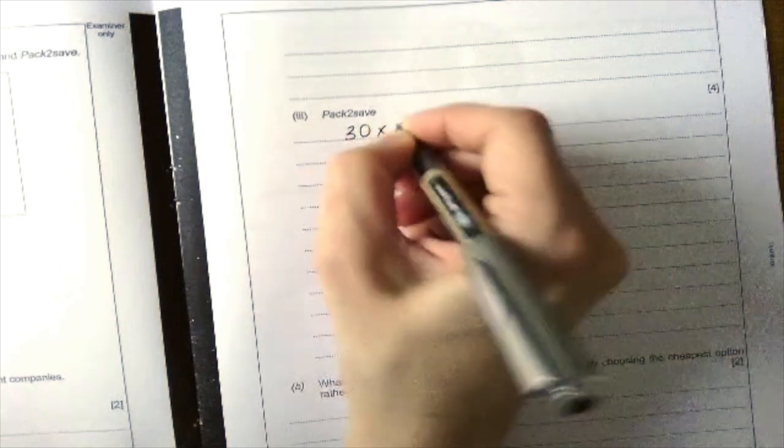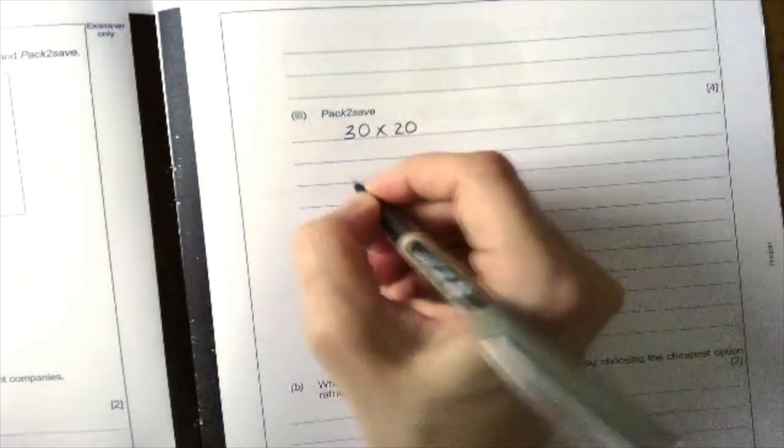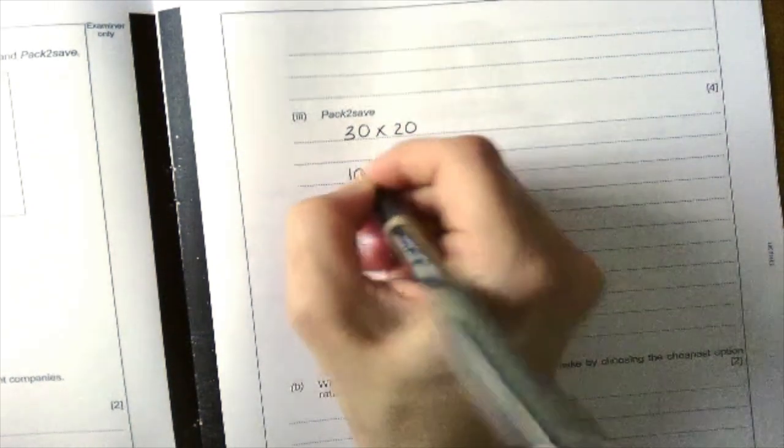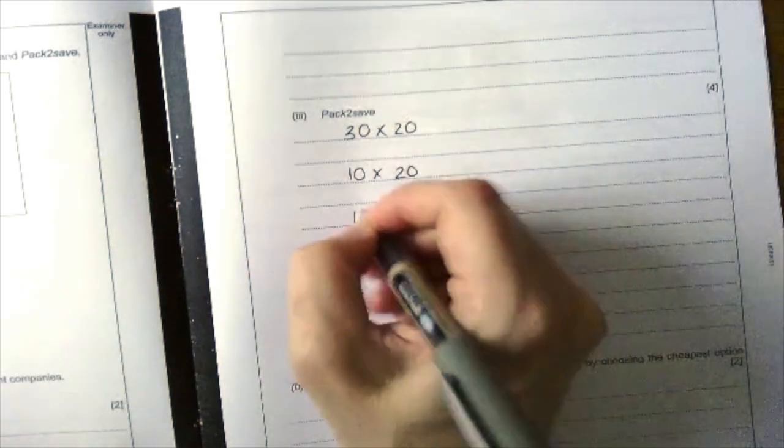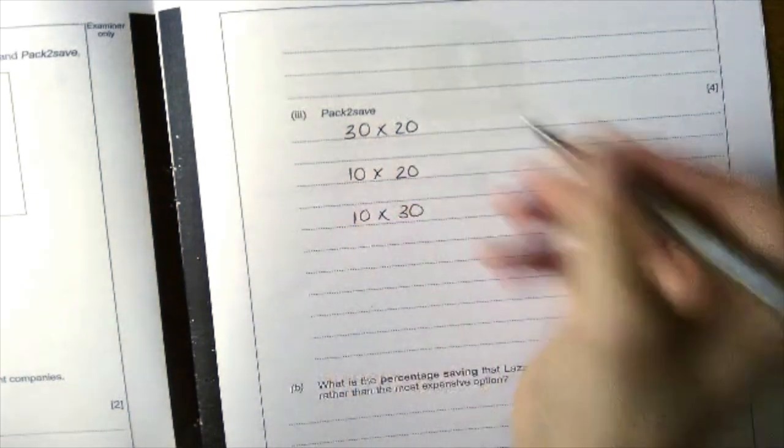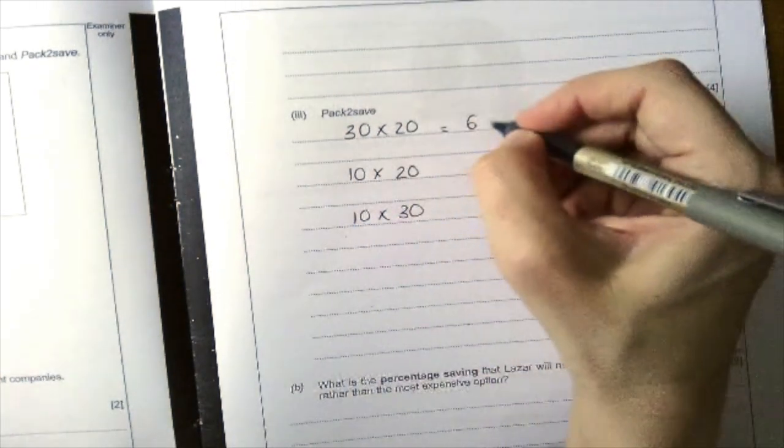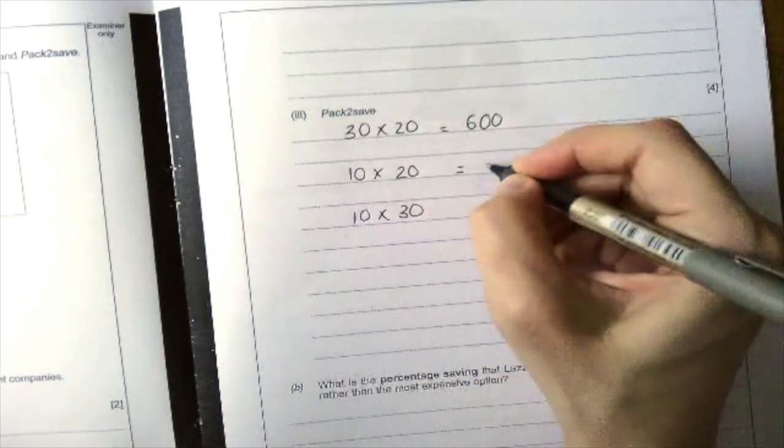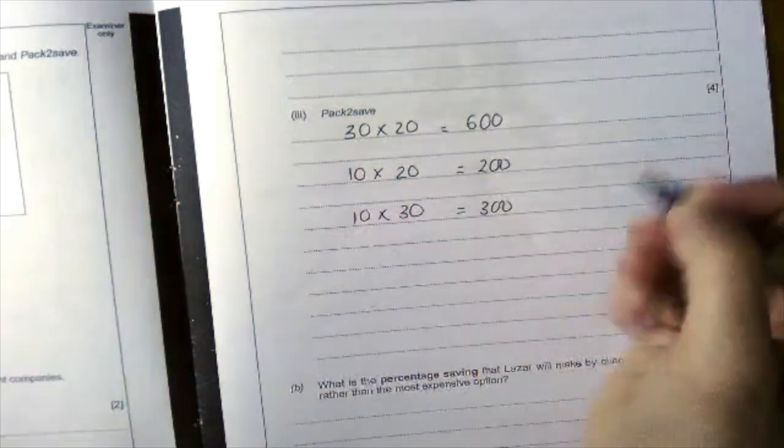So I've got 30 times 20, I've got 10 times 20, and 10 times 30. So this is 600, this is 200, and this is 300.